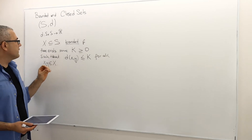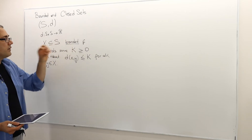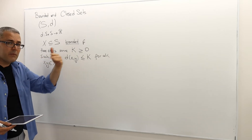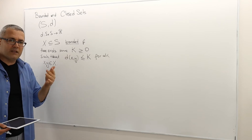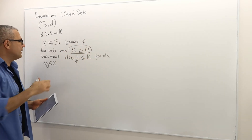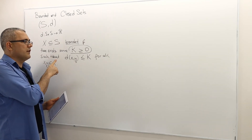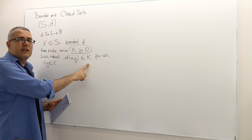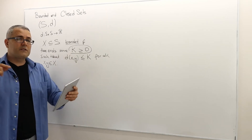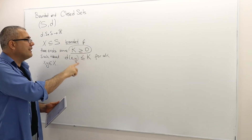So X is a bounded set — you can bound this set, it has limits. There exists some k representing how far the elements of this set can be from one another, such that when you measure the distance between any two points in X, that distance is less than or equal to k. The farthest two points in the set are at most k apart.